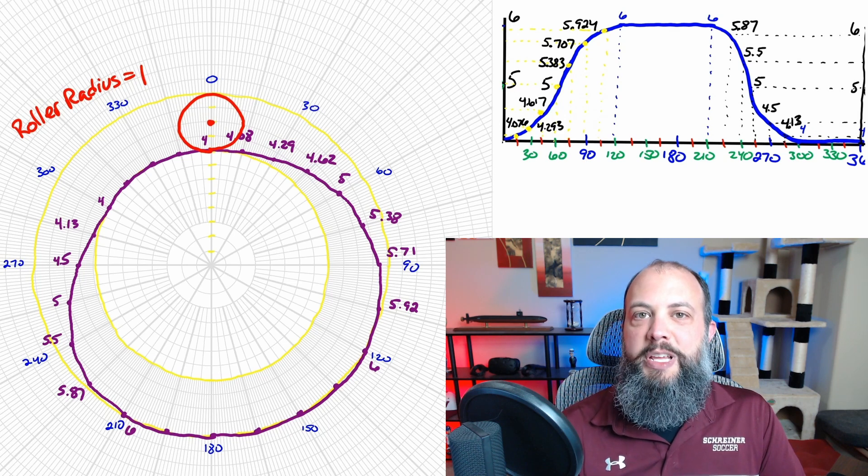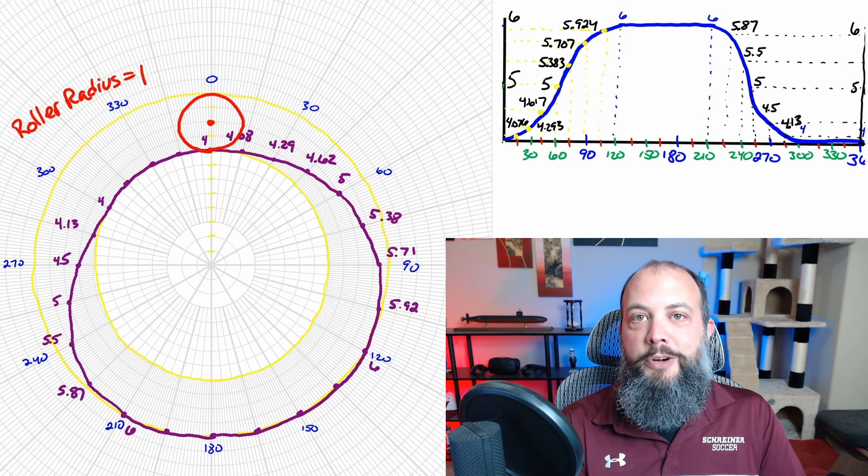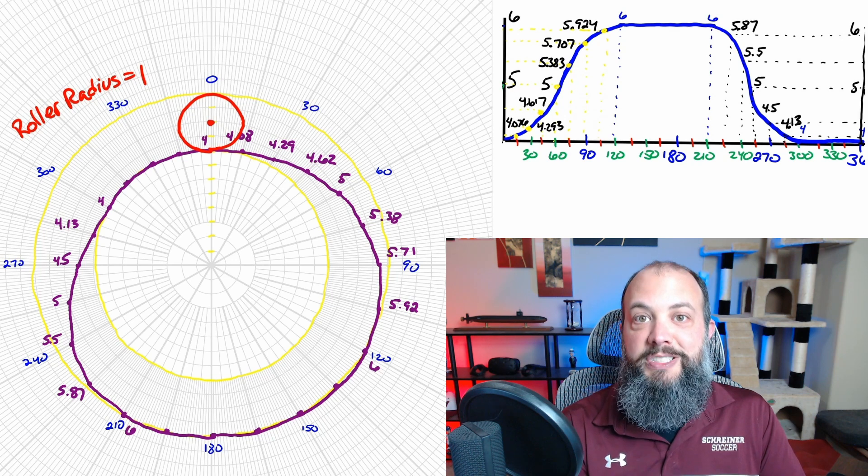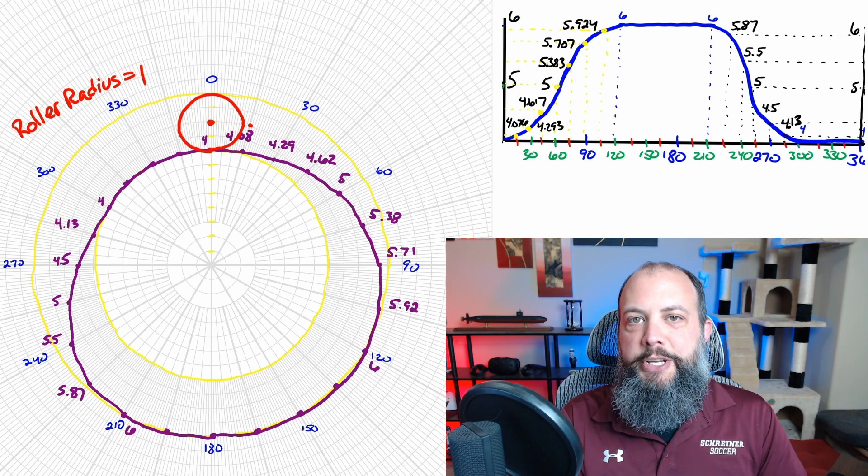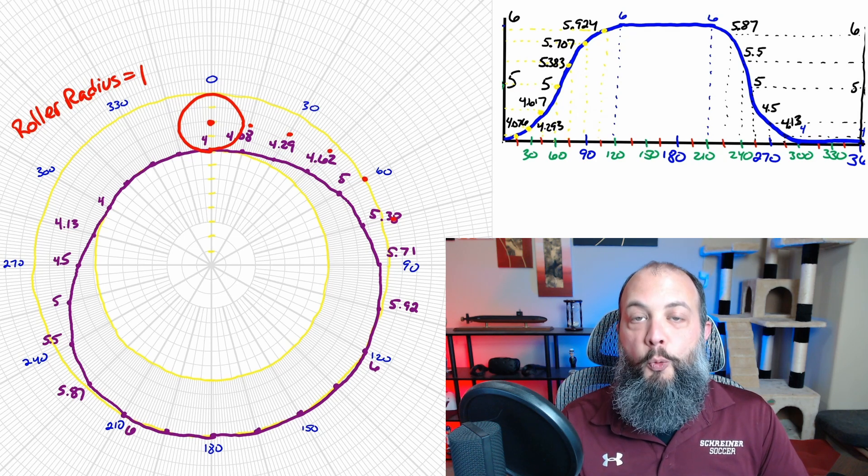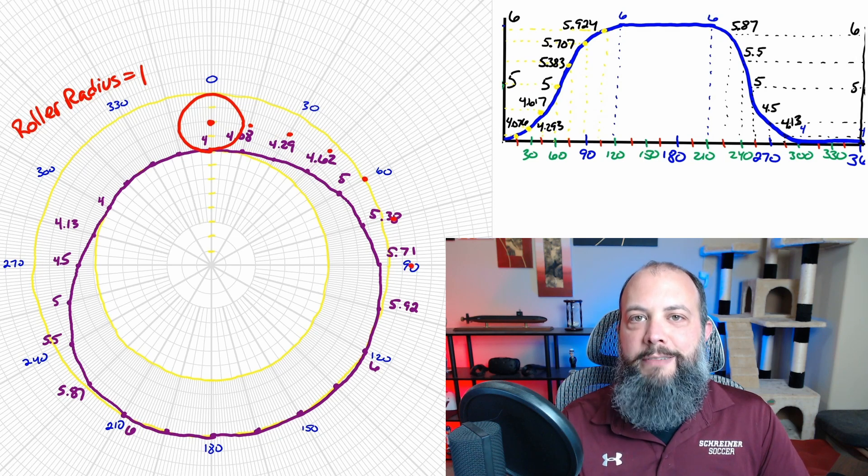The center of the circle would be radius one above that. So then the top part of the circle would be at location six, which is one above the center. So I've started this first 120 degrees by adding red dots where the center of each of these circles will be, which is radius one further away than that knife edge point.